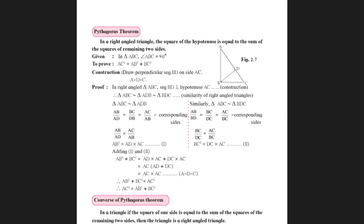Take the first two similar triangles ABC and ADB. Writing the sides in proportion: AB upon AD equals BC upon DB equals AC upon AB. Taking AB upon AD equal to AC upon AB and cross-multiplying gives AB squared equals AD times AC — equation one. For the next set, triangles ABC and BDC, write the sides in proportion and take the ratios where BC appears in both numerator and denominator. Cross-multiplying gives BC squared equals AC times DC — equation two.